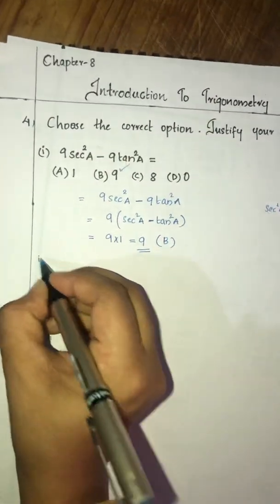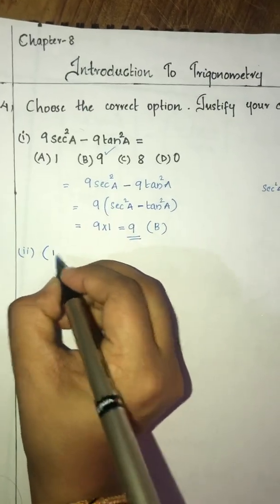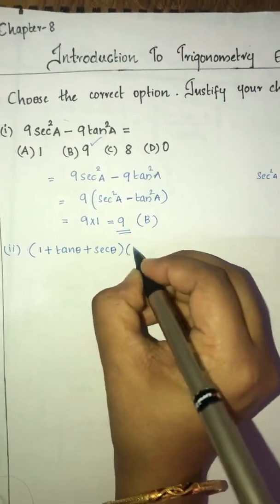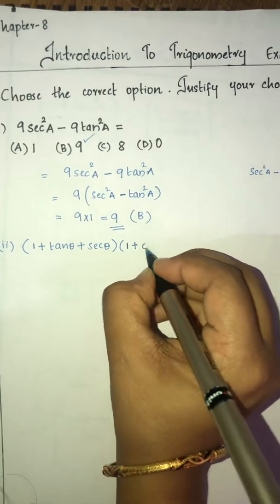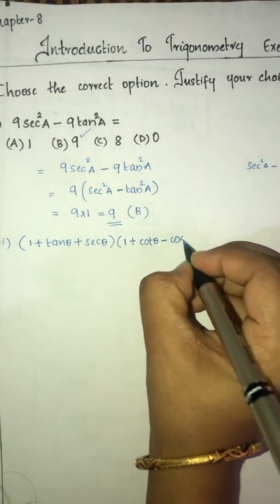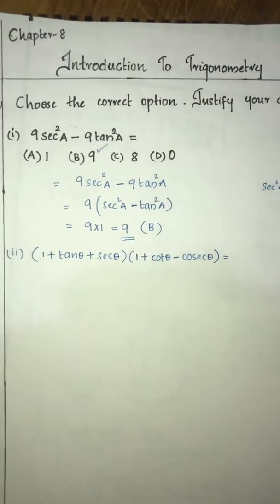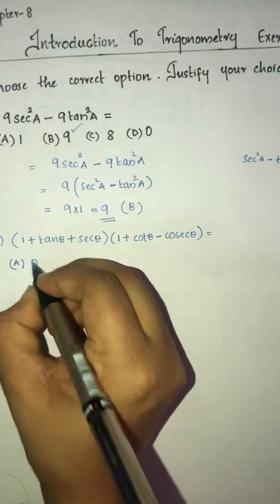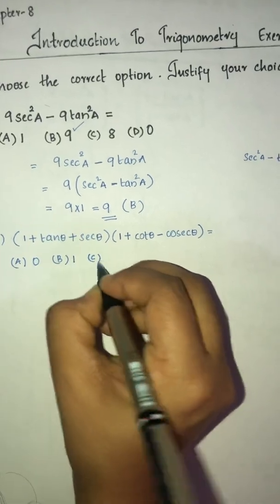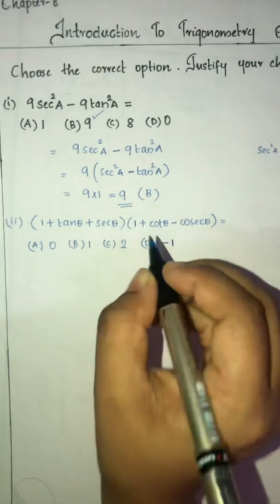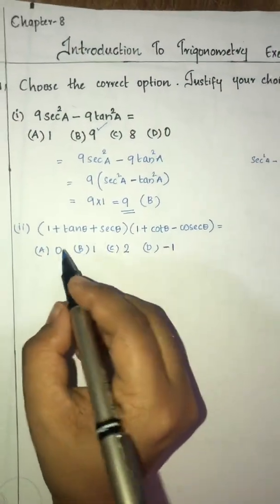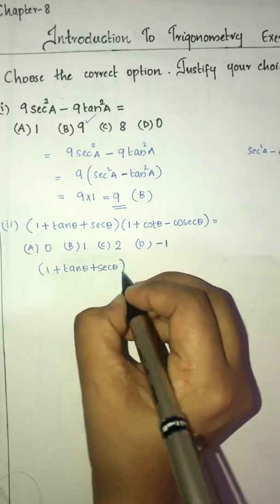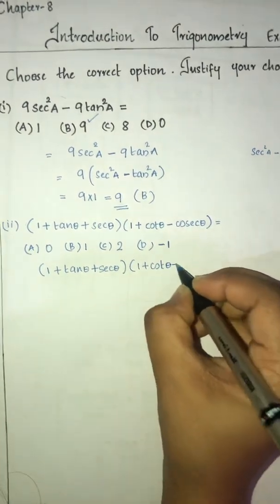The second question is: (1 + tanθ + secθ) into (1 + cotθ - cosecθ) is equal to — option A is 0, option B is 1, option C is 2, and option D is -1.